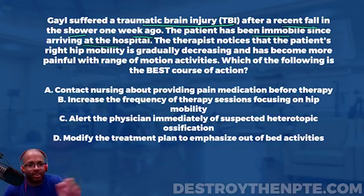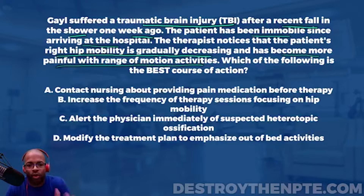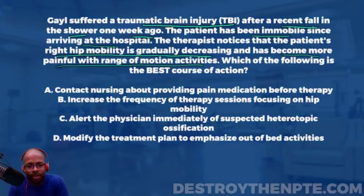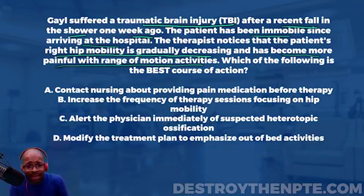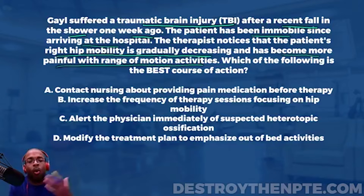The therapist notices that the patient's right hip mobility is gradually decreasing and has become more painful with range of motion activities. Notice it didn't say anything about the knee, the ankle, or the left hip — nothing about the left lower extremity, just the right. So the patient has a TBI, has been immobile in the hospital, and now we're seeing decreasing range of motion that becomes more painful. What are you starting to think?